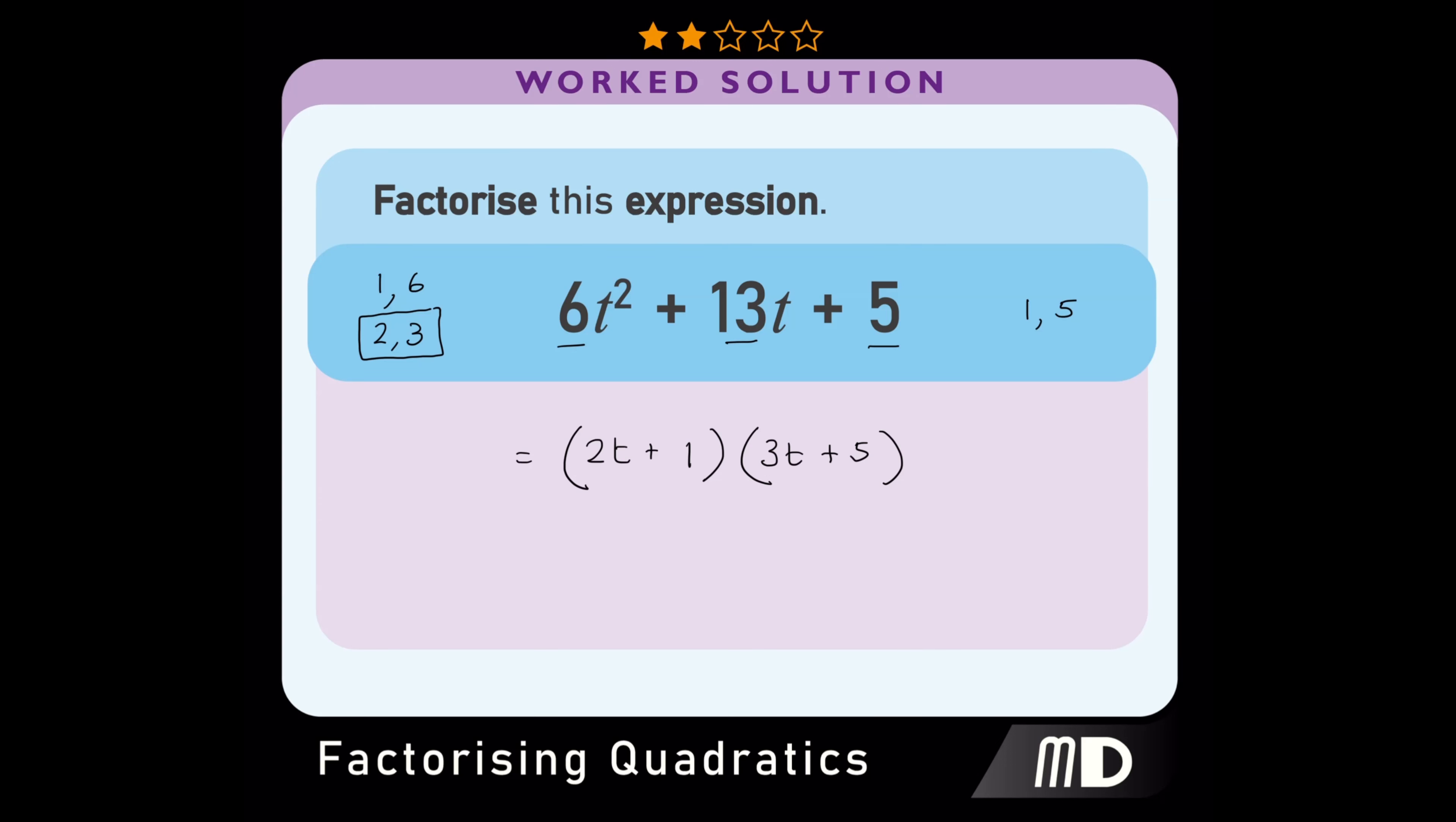So the solution is 2t plus 1 in one bracket multiplied by 3t plus 5 in another bracket.